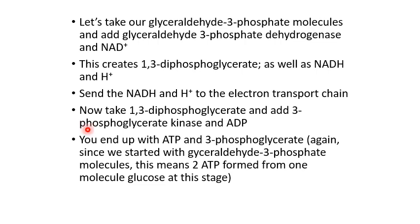We add the enzyme 3-phosphoglycerate kinase along with ADP, and we end up with ATP and 3-phosphoglycerate. This is substrate-level phosphorylation — using our substrate and enzyme we take ADP and add a phosphate from the substrate to make ATP. Remember we had two glyceraldehyde-3-phosphate molecules, so this reaction happens twice, giving us two 3-phosphoglycerate molecules and two ATP formed from the glucose molecule up to this point.